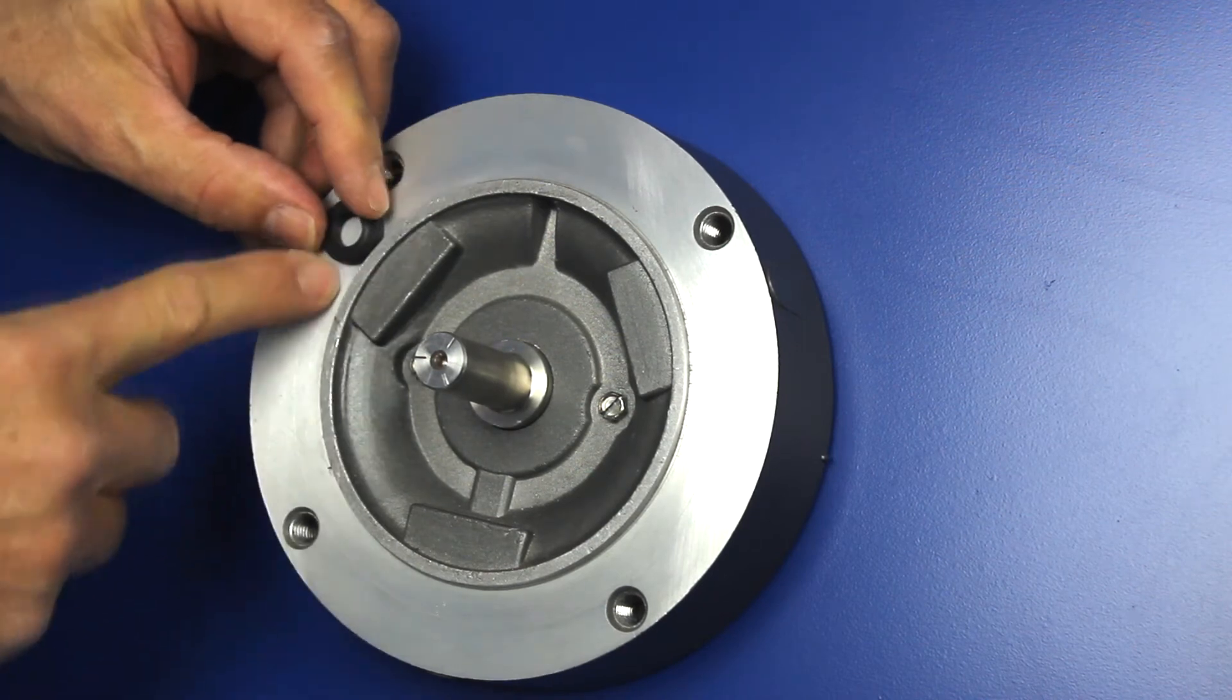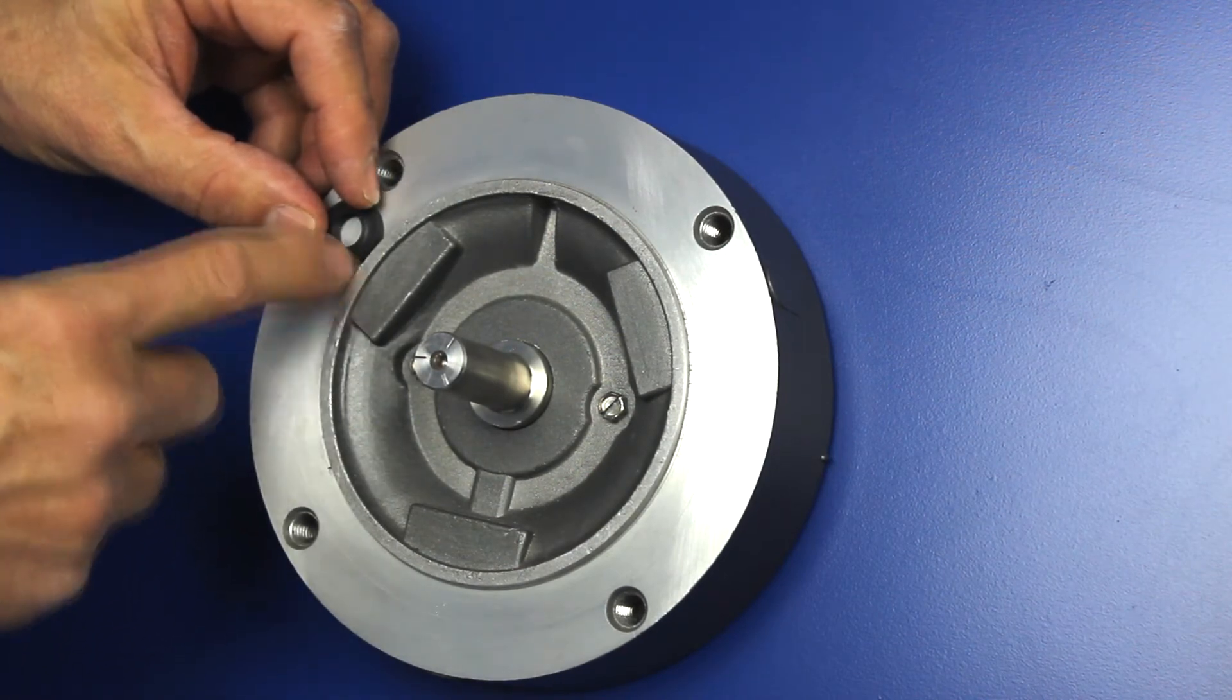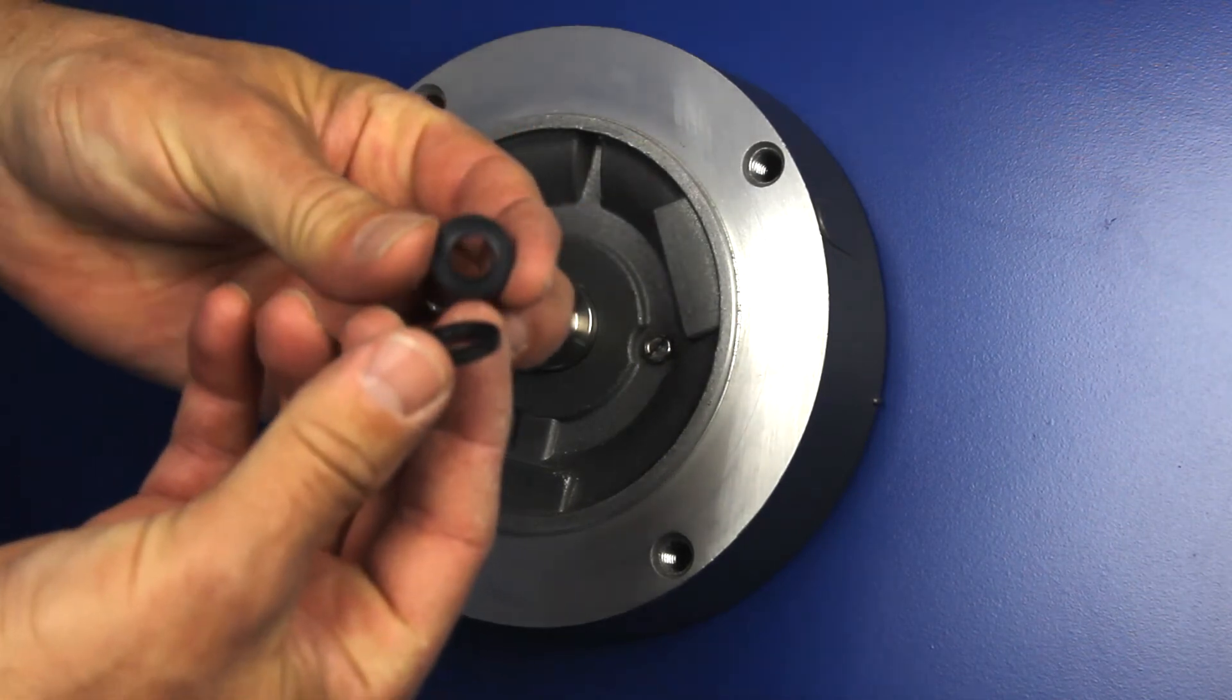The insulating washer is designed to offset the flex mount from the face of the motor and it has a boss that fits the slot on the flex mount.